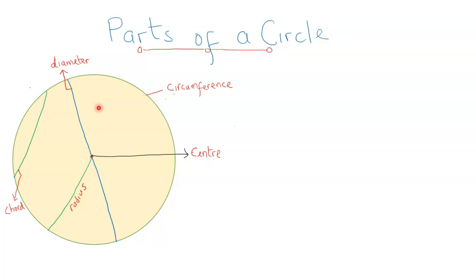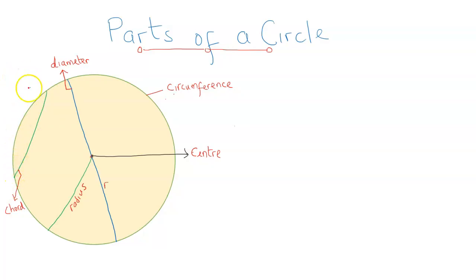The next part we are going to consider is an arc. An arc is a portion on the boundary — the circumference — that's less than half of the circumference. A diameter divides the circle into two equal halves called semi-circles, and it also divides the circumference into two equal halves. A portion of the circumference that's less than half of it is called an arc. This portion from the start to its end on the boundary is called an arc.